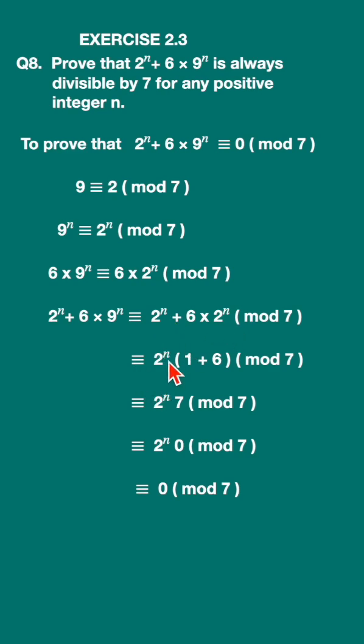Here you can see 2 raised to n is common. So in the bracket here it will be 1 plus 6 mod 7. This is congruence 2 raised to n, 1 plus 6 is 7, 7 mod 7.